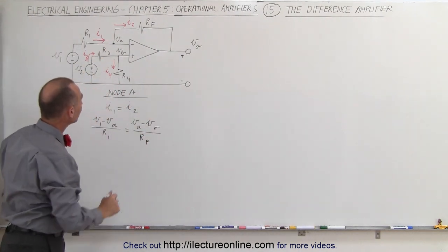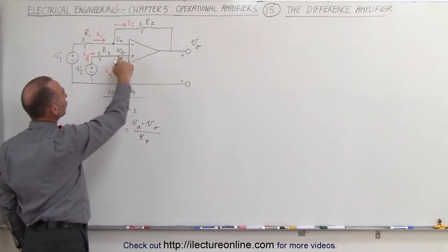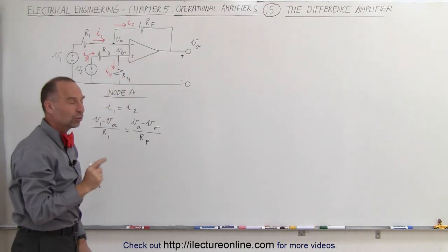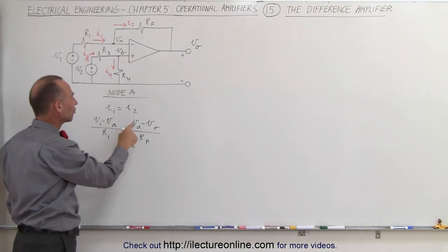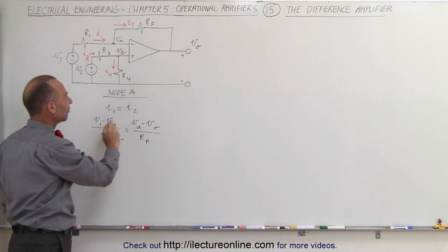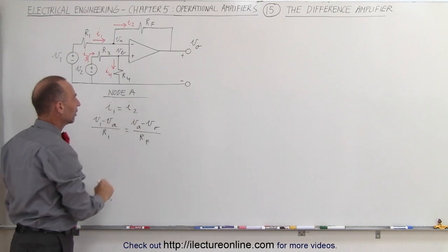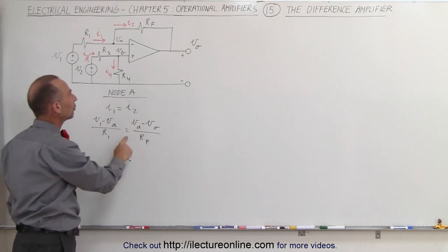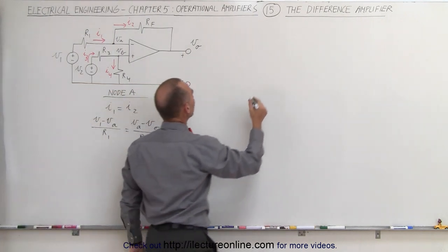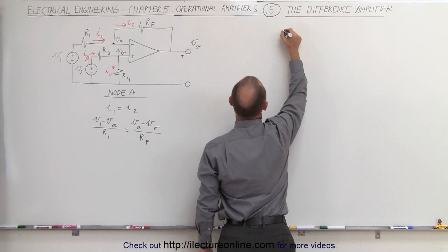We can do the same at node B, because we want to get rid of VA at some point. We want to isolate VA and substitute it with the equation we get from node B.